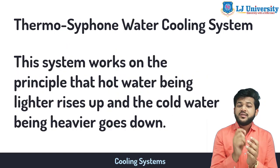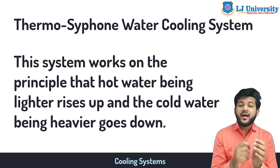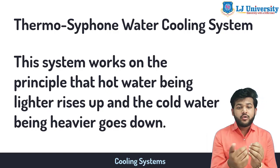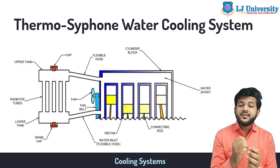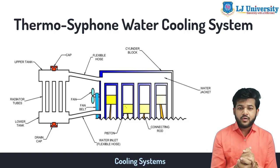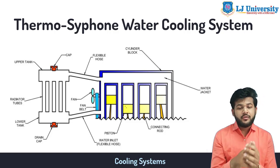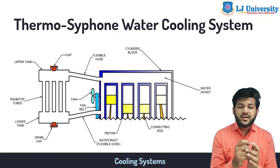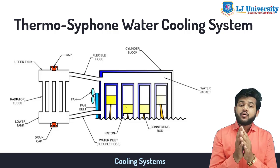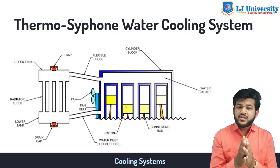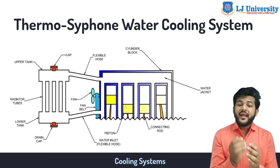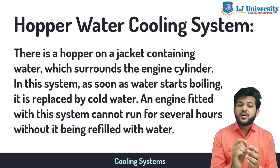The thermosiphon water cooling system works on the principle that hot water, being lighter, rises up and cold water, being heavier, goes down. In this system, the radiator is placed at a higher level than the engine for easy water flow. Heat is conducted to the water jackets, from where it is taken away by convection through circulating water in the radiator. As the water in the jackets becomes hot, it rises to the top of the radiator, and cold water from the radiator flows down to take its place, setting up a continuous circulation.